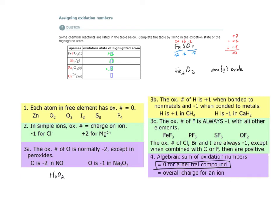We can also find this another way by working backwards from oxygen. The oxidation number of oxygen is normally minus two, except in peroxides — and this is not a peroxide. Each oxygen atom has an oxidation number of minus two, and there are three of them, giving a total of minus six. Since compounds are neutral, the algebraic sum must equal zero. With two iron cations, each one must be plus three, because 2 × (+3) = +6, and +6 + (−6) = 0.